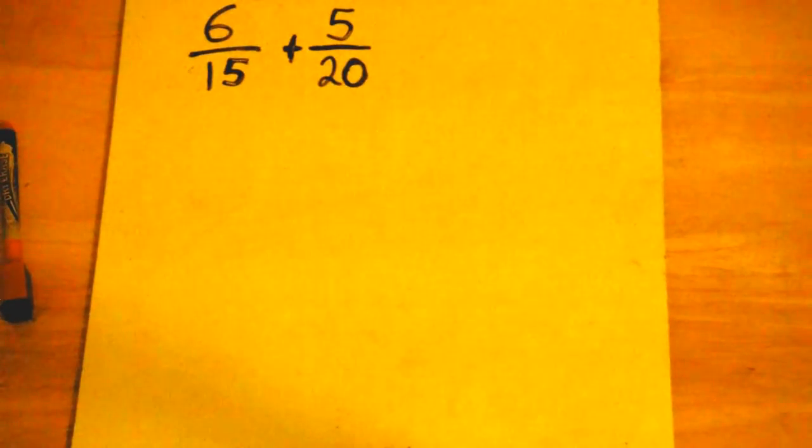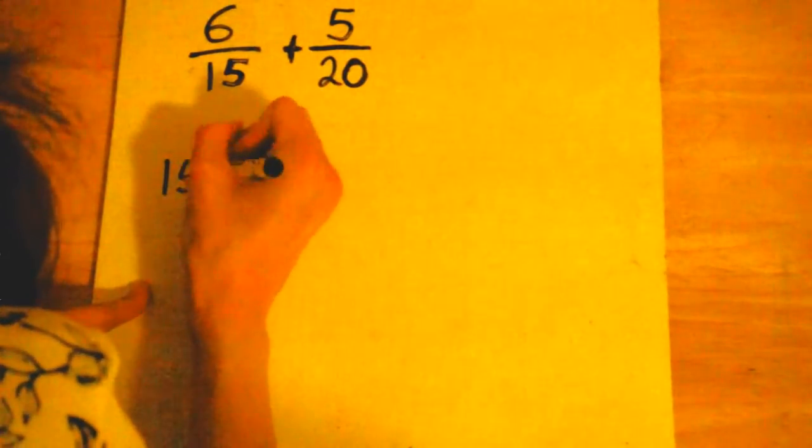Okay, so let's take a look at this problem. I have six fifteenths and five twentieths. What I want to do is to go ahead and change them into equivalent fractions to where they have a common denominator. To do this, I'm going to go ahead and list the multiples of each denominator starting with fifteen. So I'm going to go ahead and count by fifteens for a while.